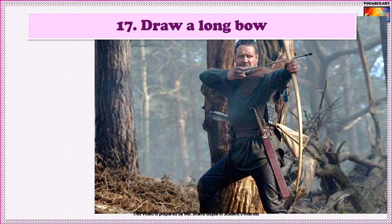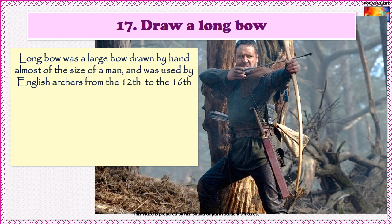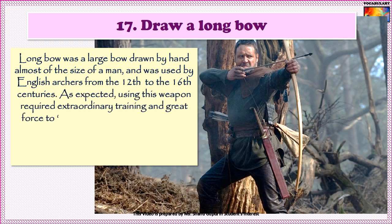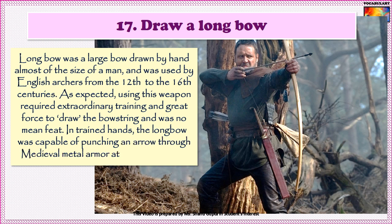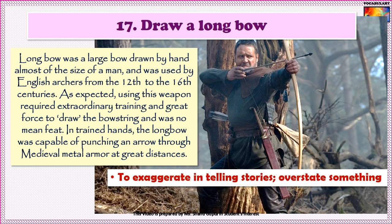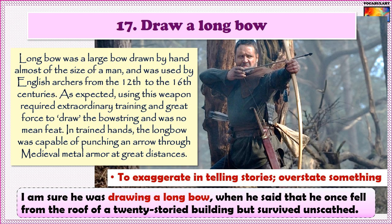Next, we have a very interesting idiom: to draw a long bow. A long bow was a large bow drawn by hand, almost the size of a man, used by English archers from the 12th to the 16th centuries. Using this weapon required extraordinary training and great force to draw the bowstring and was no mean feat. In trained hands, the long bow was capable of punching an arrow through medieval metal armor at great distances. So to draw the long bow means to exaggerate in telling stories or to overstate something. Example: I am sure he was drawing a long bow when he said he once fell from the roof of a twenty-storied building but survived unscathed.